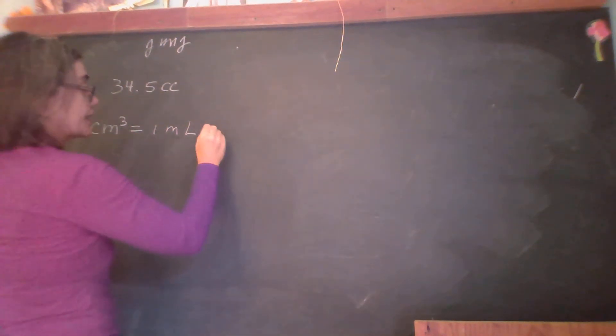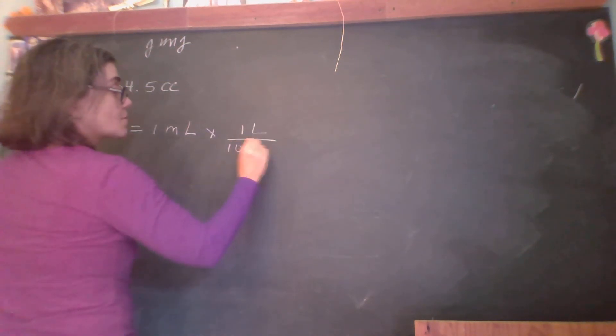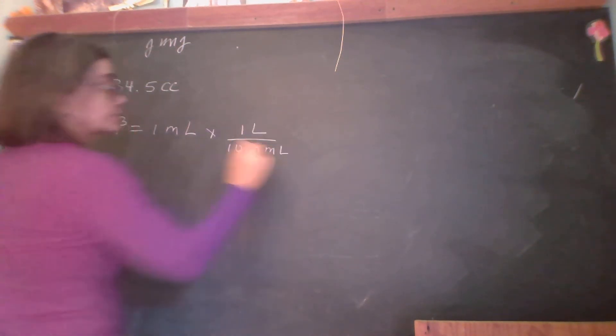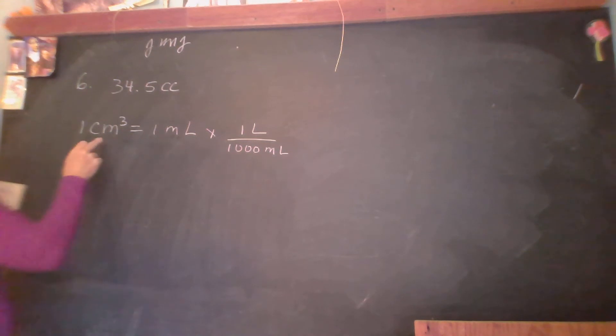So how are we going to go from cubic centimeters to milliliters to liters? We want to get liters, right? Yes. Alright, so we're multiplying. We're just going to turn this into milliliters because they're exactly the same.